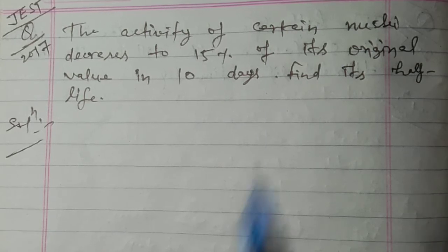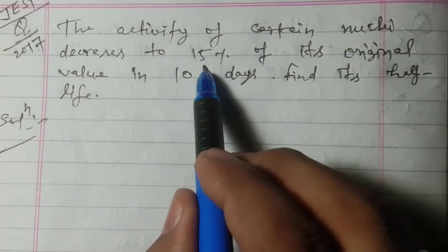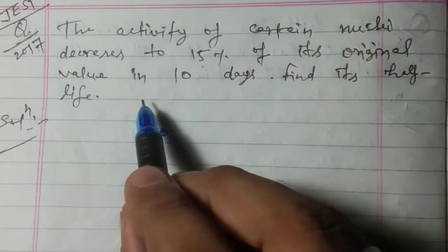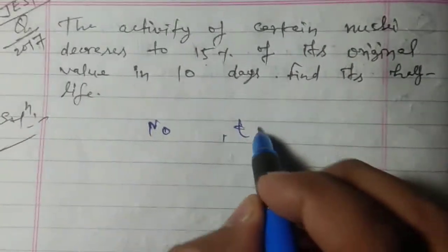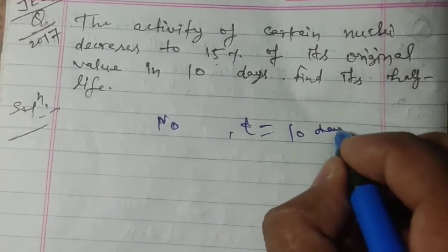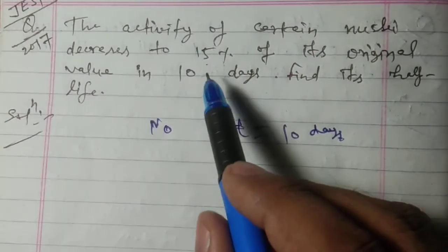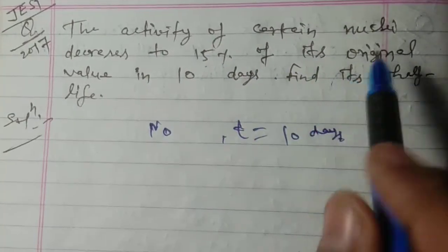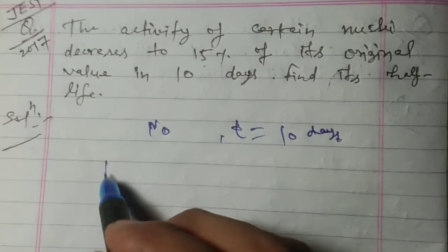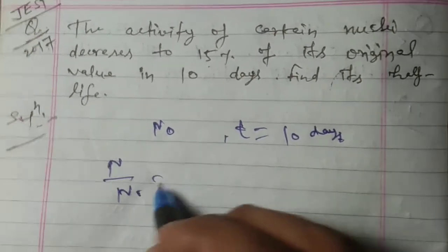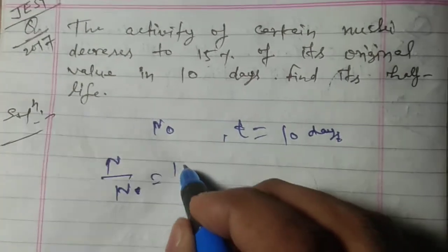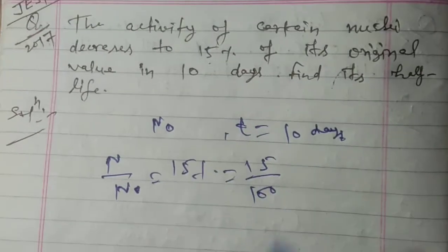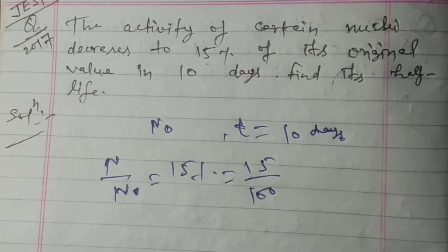Another question which was asked in 2017 in JEST exam: the activity of certain nuclei decreases to 15% of its original value. So it will give N upon N naught equal to 15%, which is equal to 15 upon 100. Now we have to find the half-life.